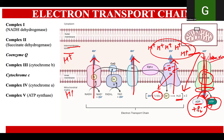At the end of this electron transport chain, a large number of ATP molecules have been produced. This is the energy currency of the cell, which is utilized by cells for energy purposes.